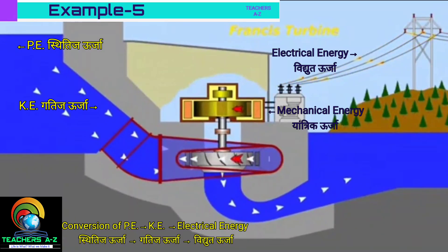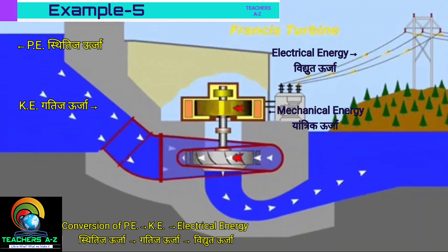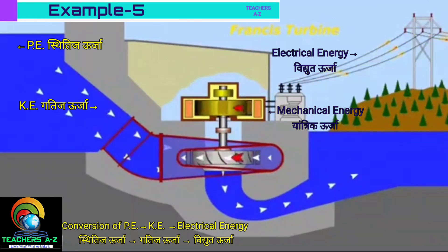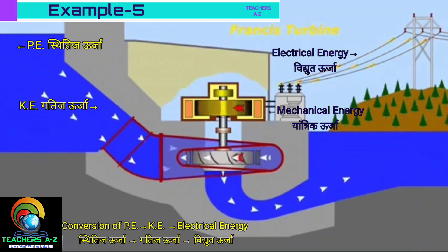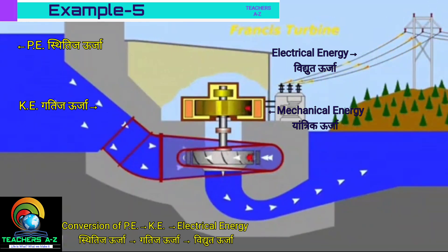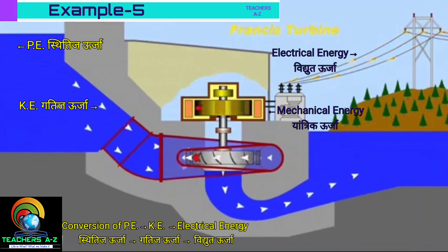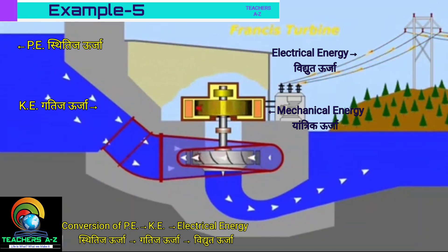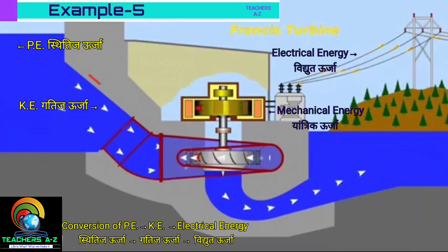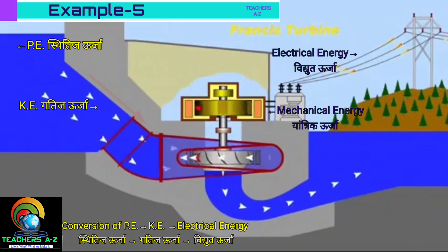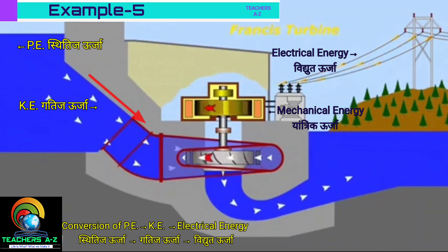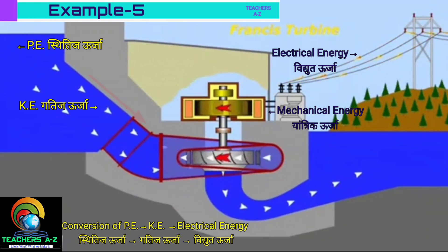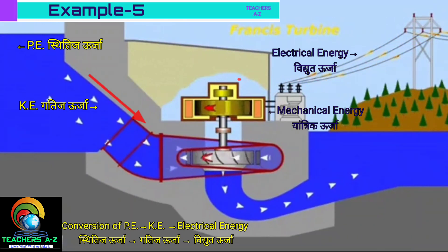Next example is conversion of potential energy into kinetic energy and then into electrical energy. Water falls down and the potential energy of the water is converted into kinetic energy due to the motion of water. This kinetic energy of water rotates the turbine of the generator, which produces electricity.